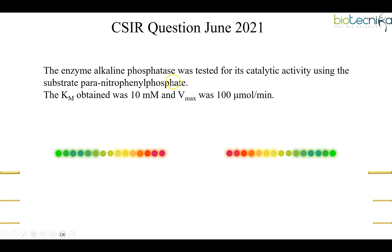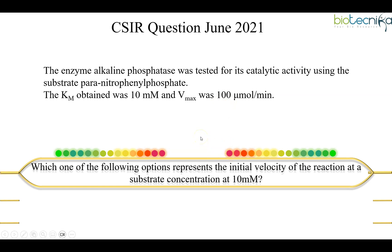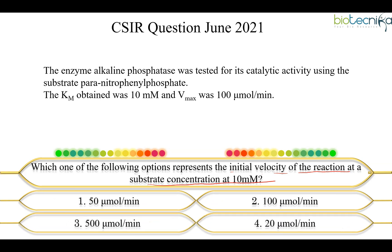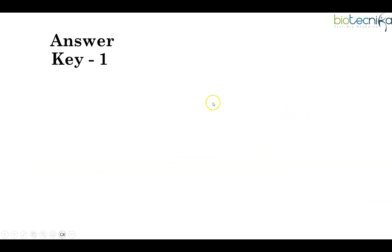The enzyme alkaline phosphatase was tested for its catalytic activity using the substrate para-nitrophenyl phosphate. Km and Vmax are given. What you have to find out is which of the following options represents the initial velocity of a reaction at a substrate concentration of 10 millimolar. You have to find out the initial velocity V0 — a pretty straightforward question where you use the Michaelis-Menten formula.